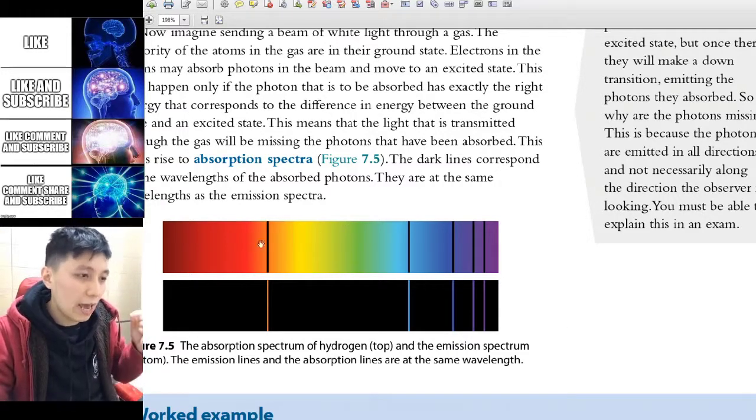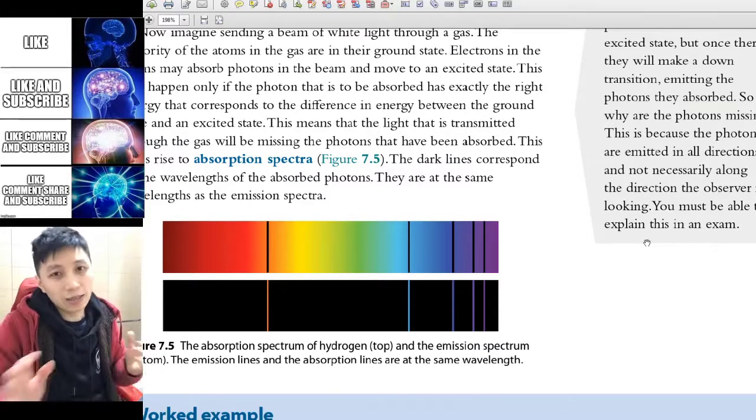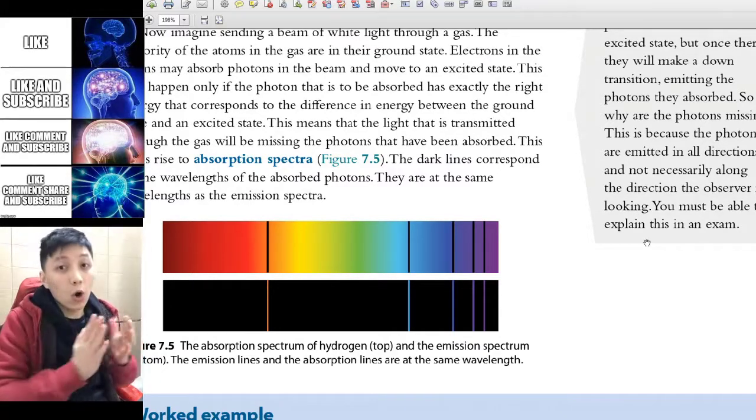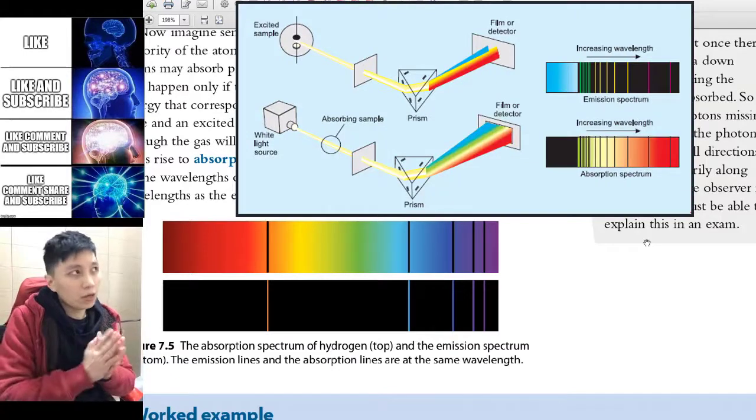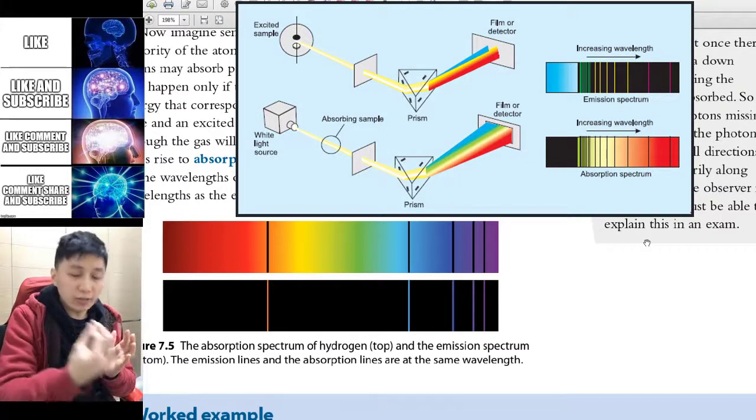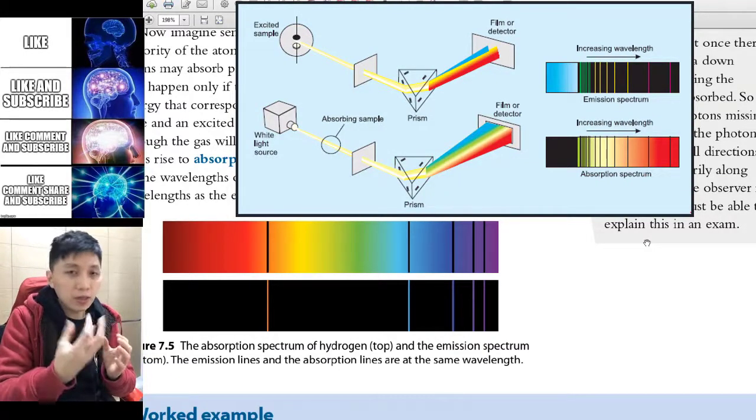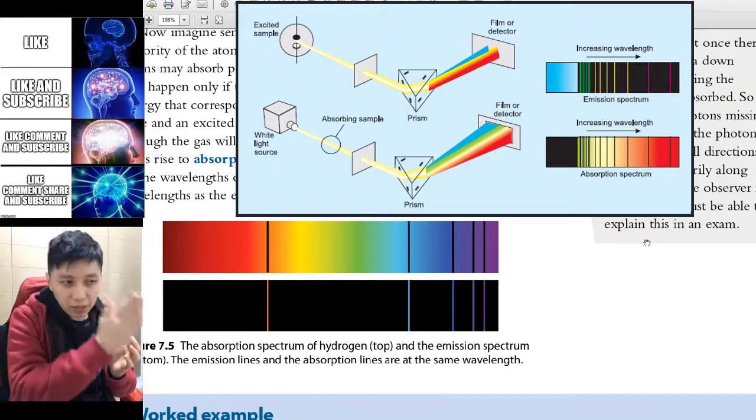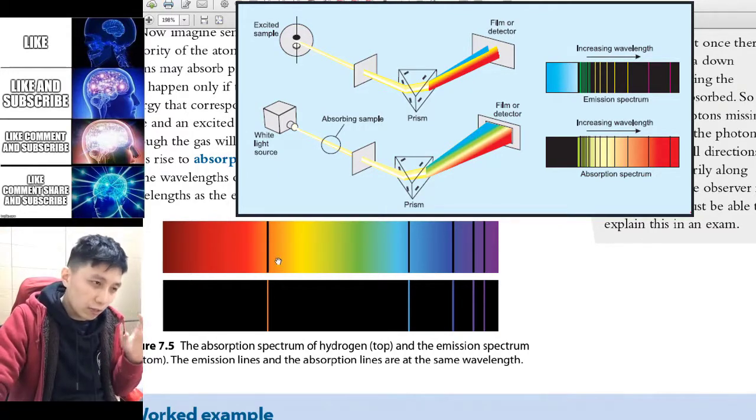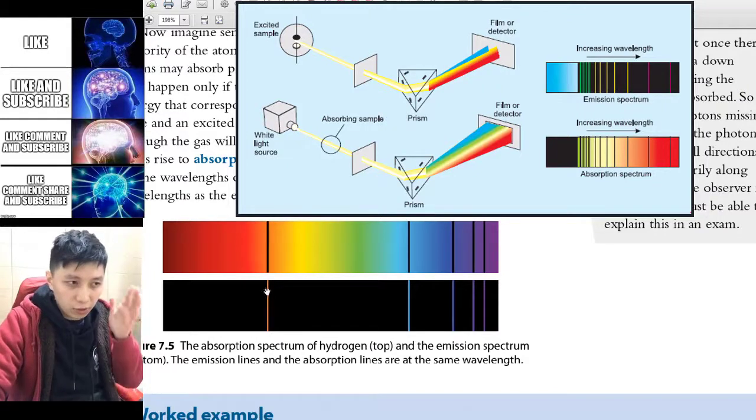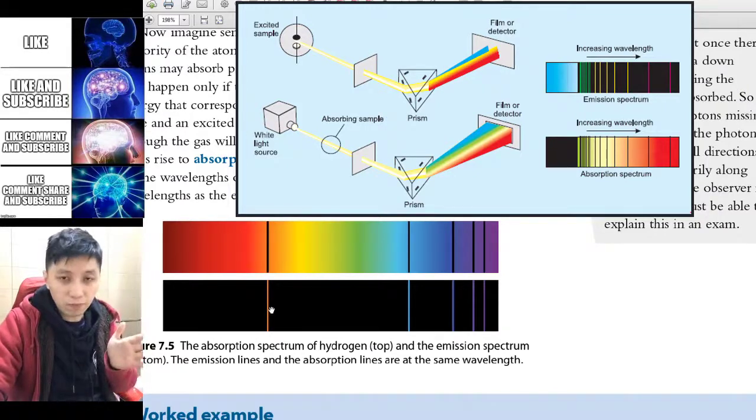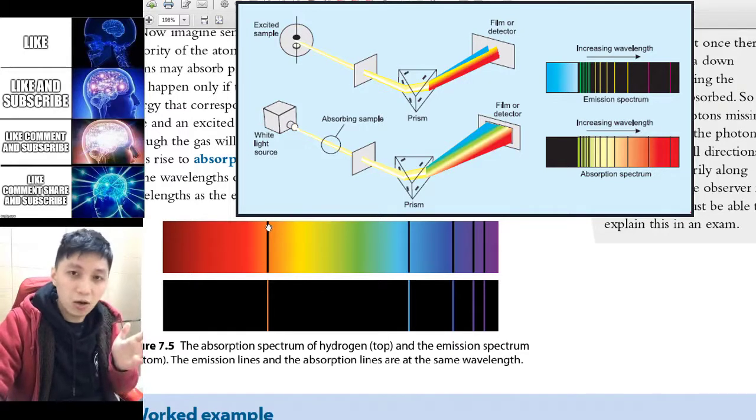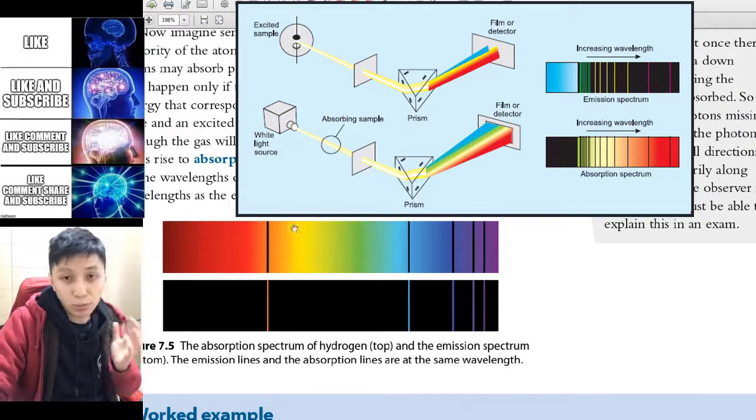The one at the top is called the absorption spectrum, and that is done by another setup. But the whole idea is the same, because when you shine the light through those elements, they will absorb that particular energy. So if you look at this picture, this is for both, I think, hydrogen. And so that's why you can see the position of those lines on the emission spectrum. It's the same as the missing line on the absorption spectrum.